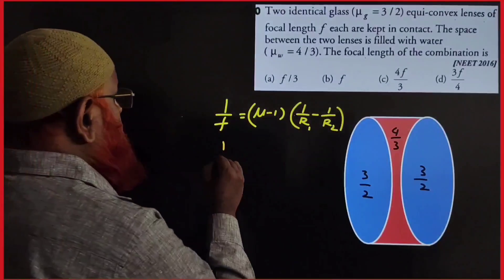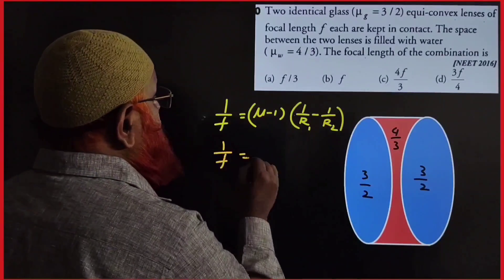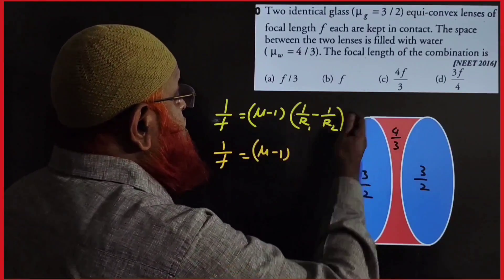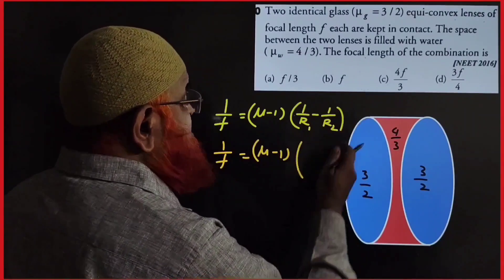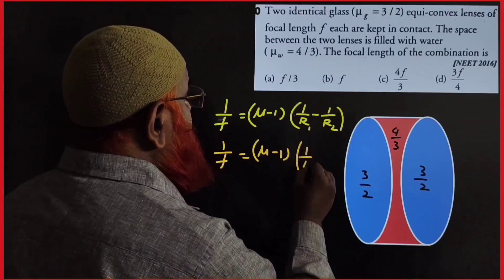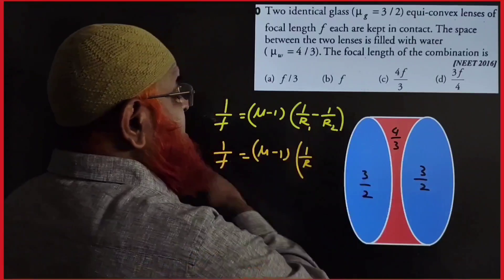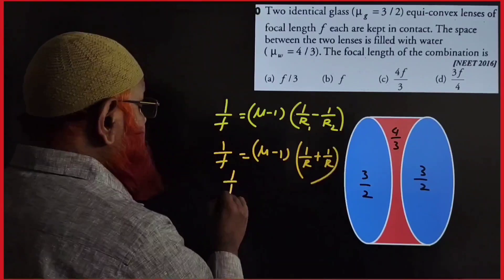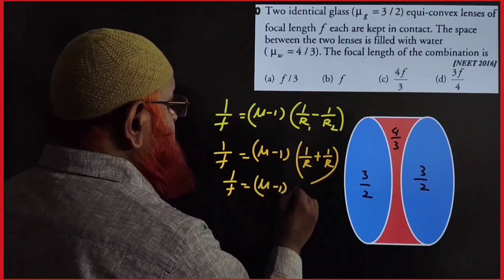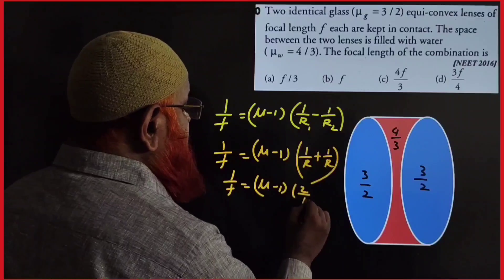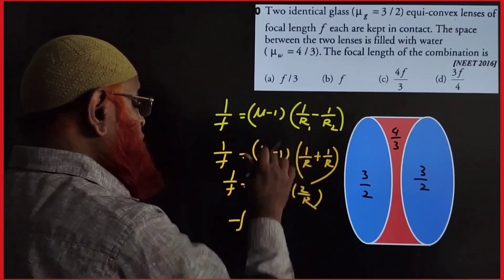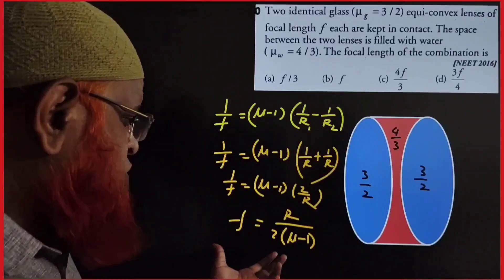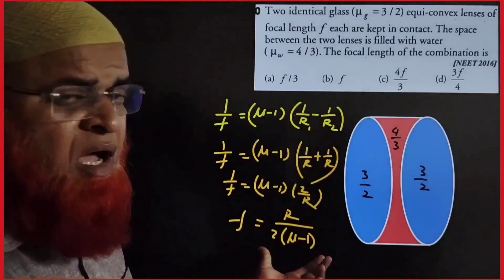So 1/f = (μ − 1) × (1/R + 1/R) for a convex lens where the radius of curvatures are the same, giving 1/f = (μ − 1) × 2/R. Therefore f = R / (2(μ − 1)). This is the focal length formula for a convex lens.